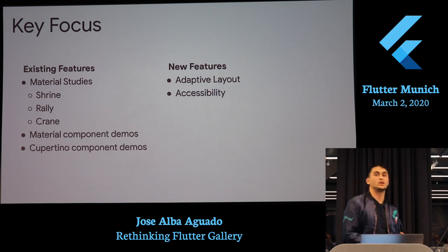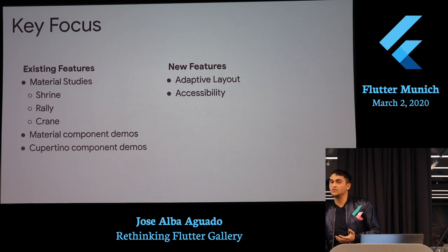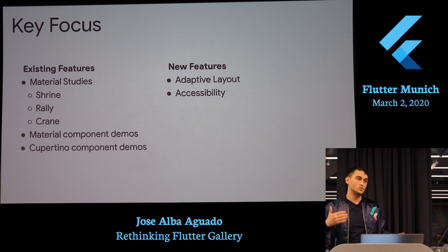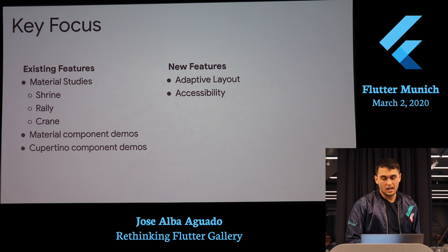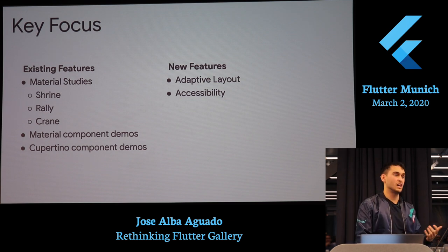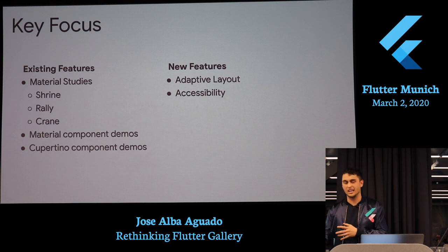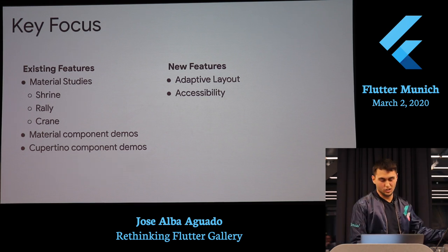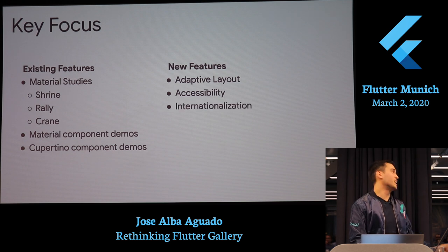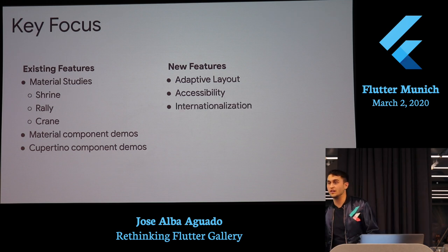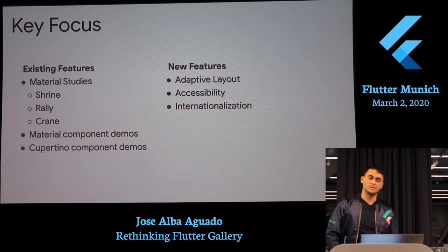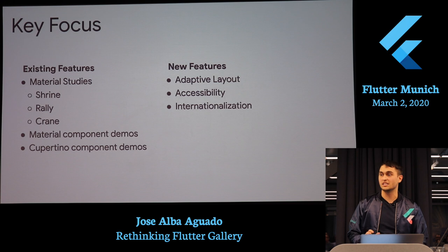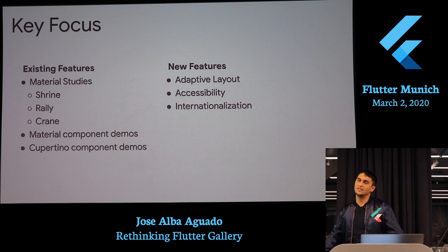We also introduced accessibility — for example, if your text scaling needs to be bigger, we introduced that feature. In case you can't see, you can use TalkBack and still use the Flutter Gallery. The last feature is internationalization: we support a bunch of different languages because we worked with an internal Google translation team, and they translated the Flutter Gallery from just English to over 50 languages.